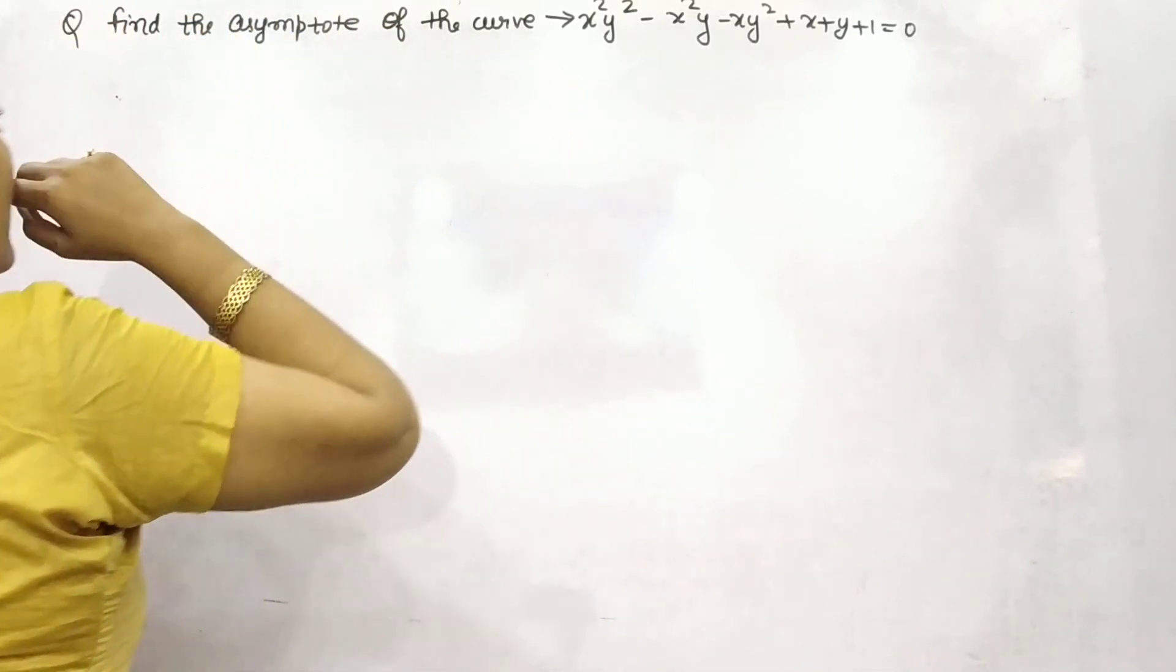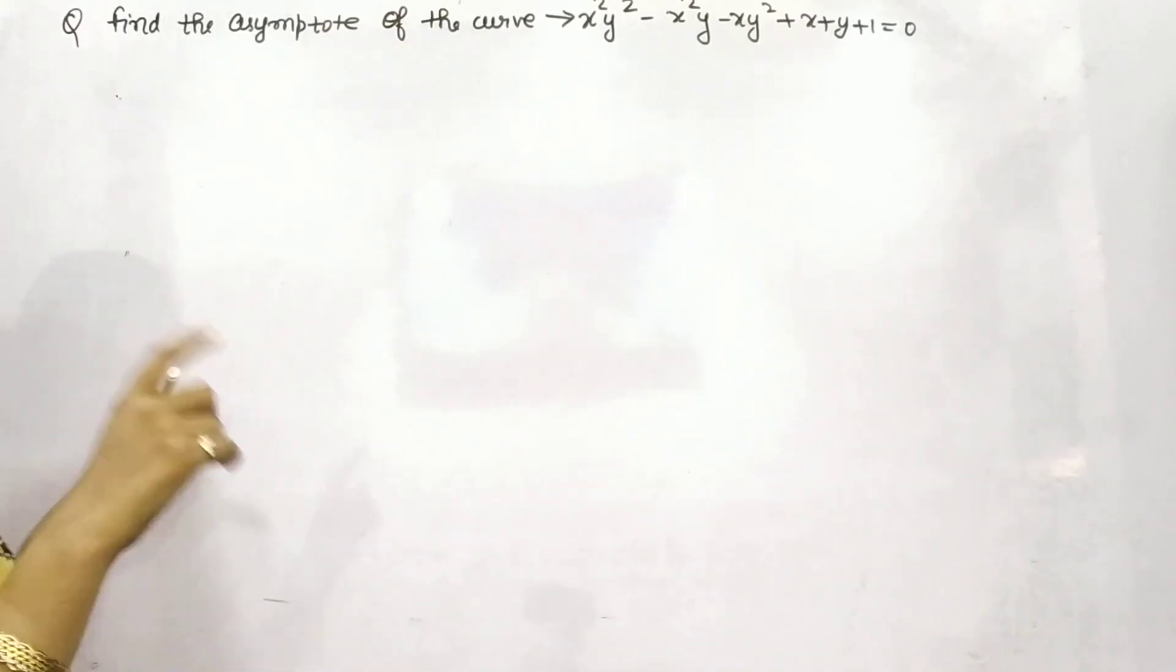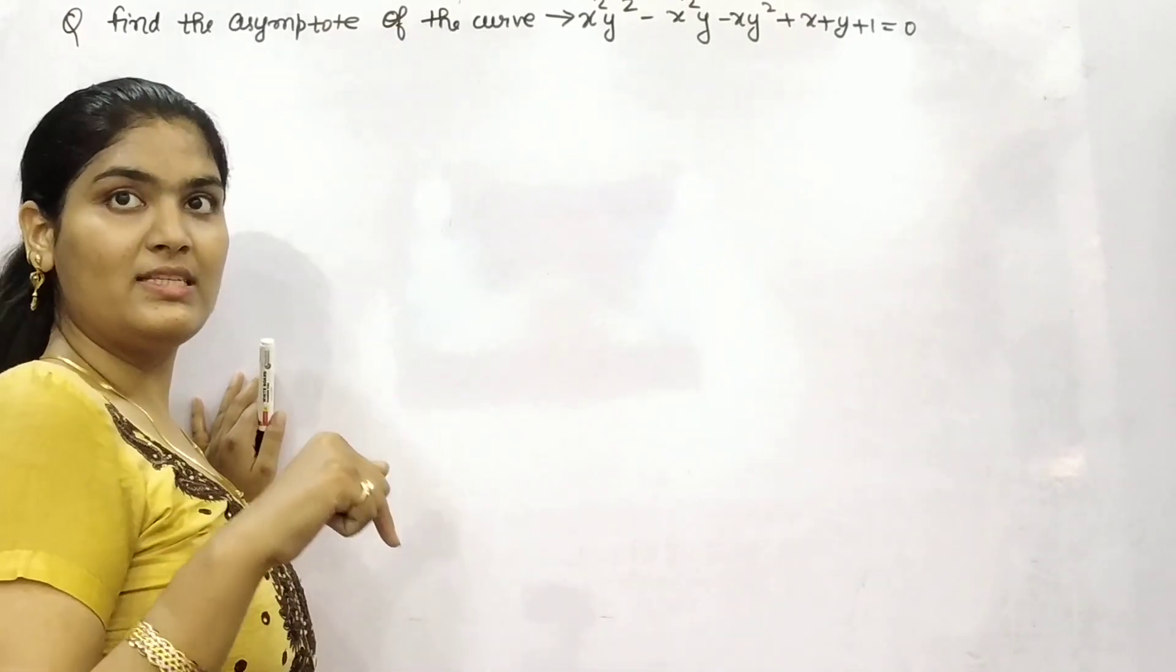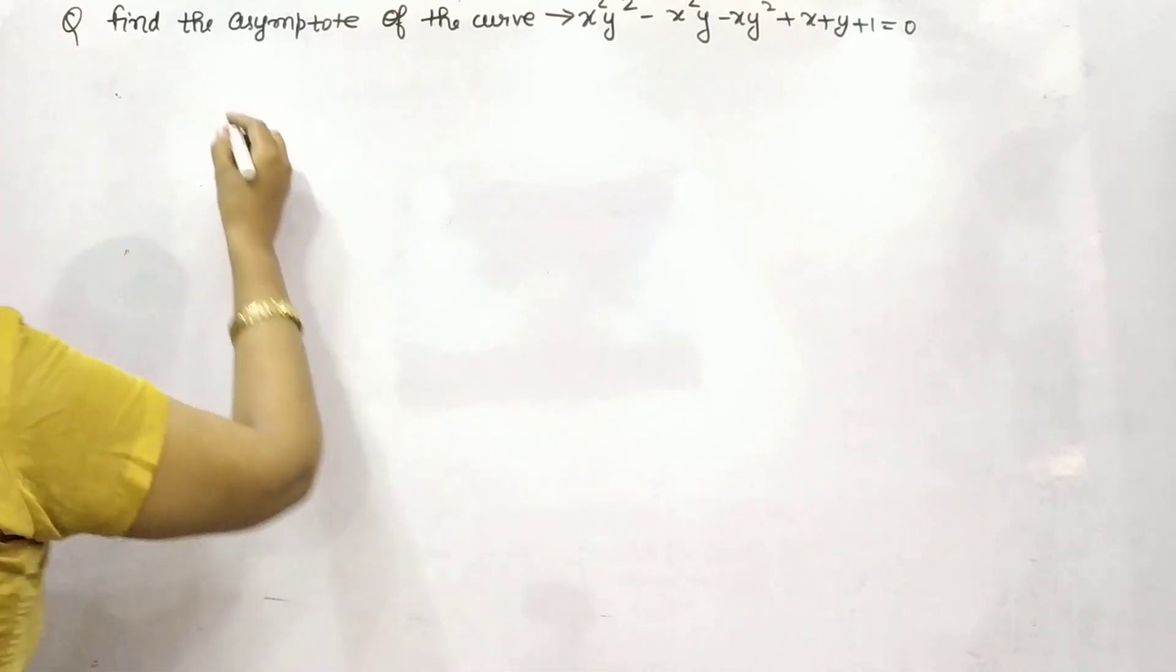Let's take an example. Here you are given the curve, you need to find out the asymptote. Now let's find out whether it is parallel to x-axis or parallel to y-axis.